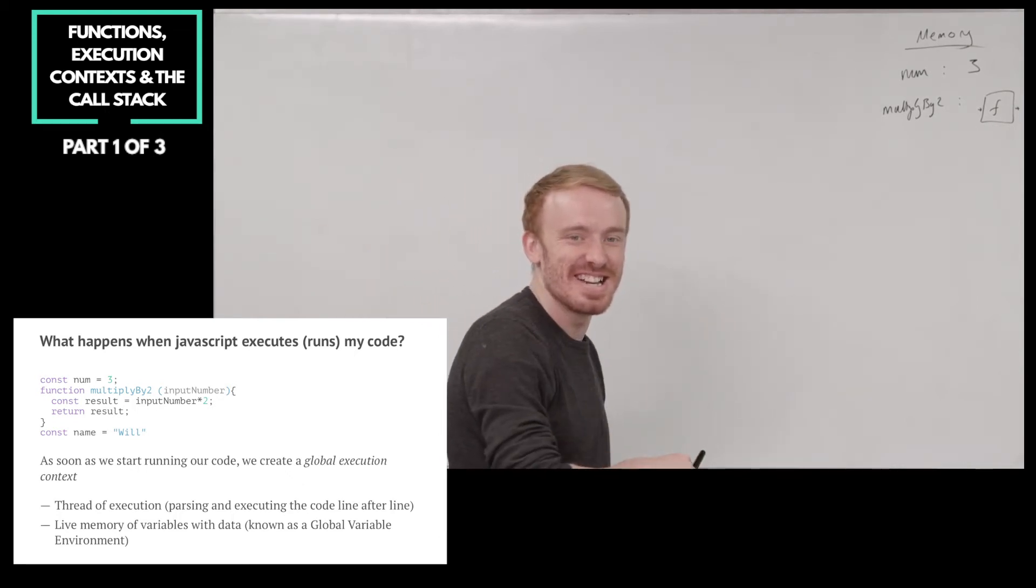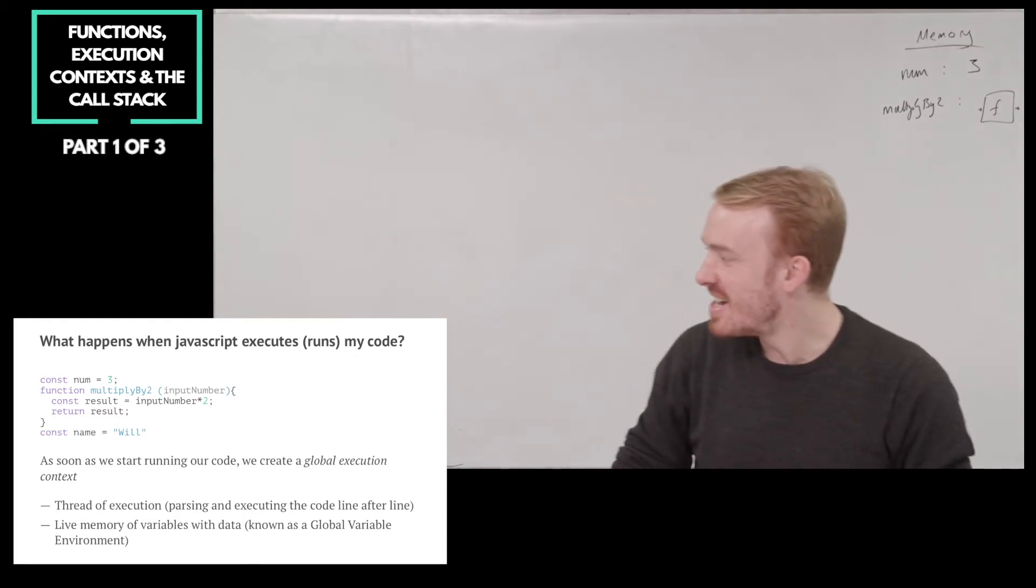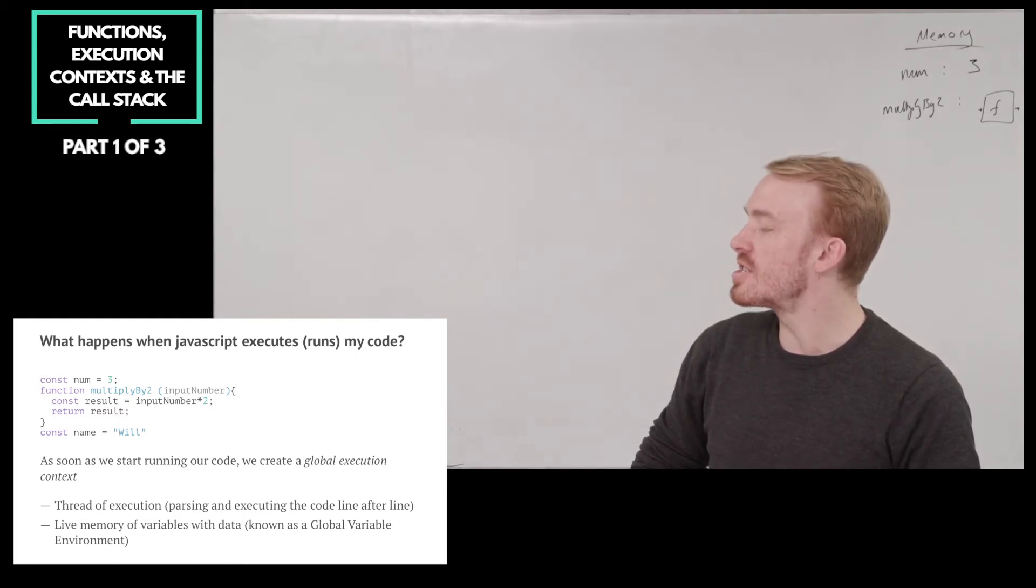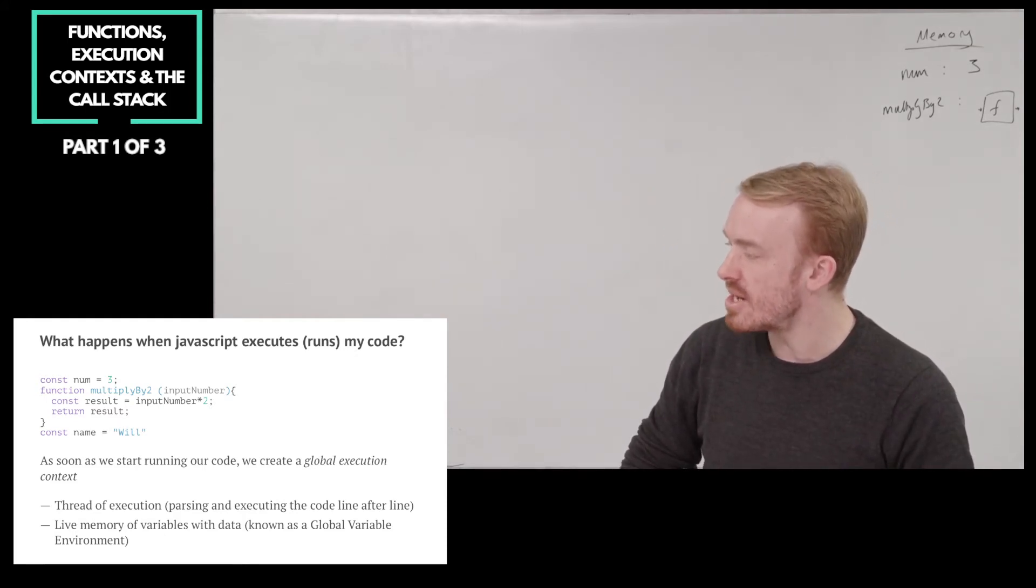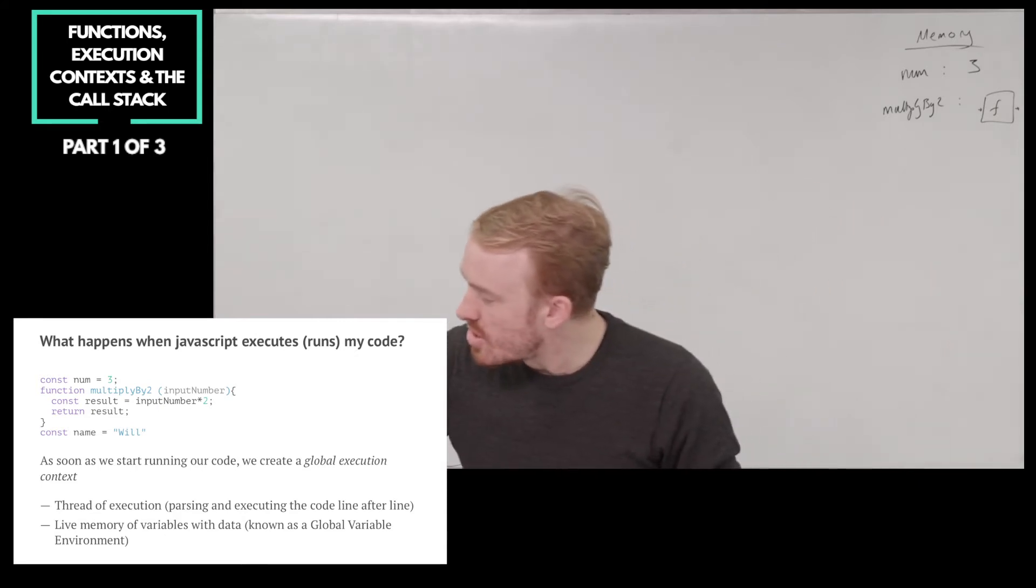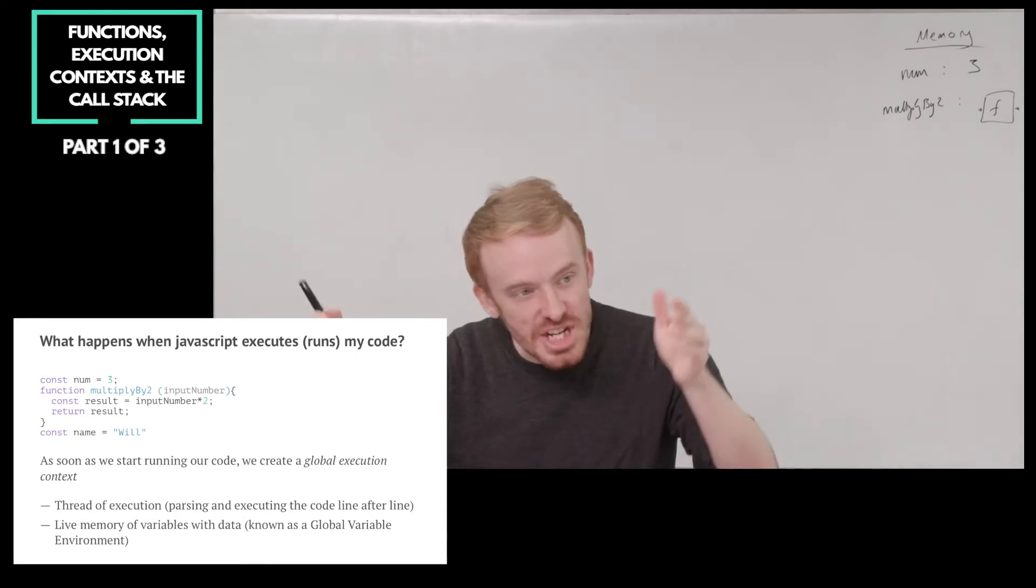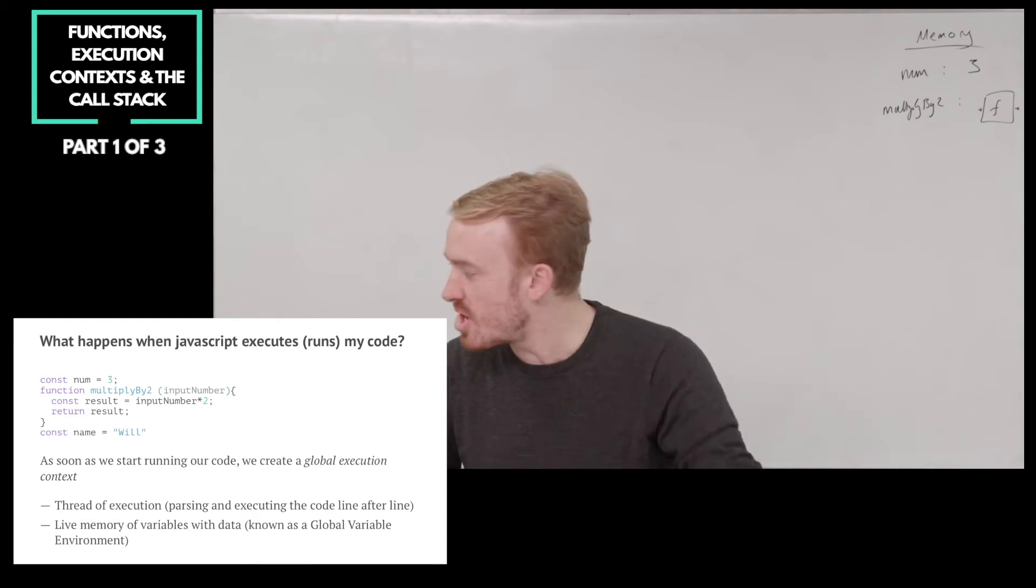So we're going to declare a variable name and assign it to the string. So we're going to declare a constant name. So note, you did not go to the third line visually on the page. Why did you not go inside of the multiplyBy2 function first, Skyler? Because we did not call the function.